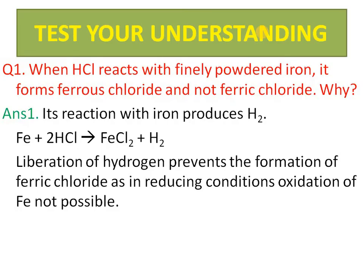Discussion question: when hydrogen chloride reacts with iron, it forms ferrous chloride — not ferric. Why? This is a property of acid — displacement of hydrogen from acid by metal produces hydrogen gas. Hydrogen provides a reducing atmosphere, so you cannot expect ferrous chloride to change to ferric chloride. Changing from 2+ to 3+ is not possible in a reducing atmosphere, because oxidation cannot occur in a reducing atmosphere.